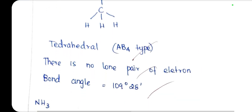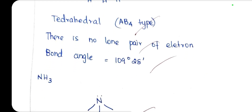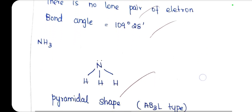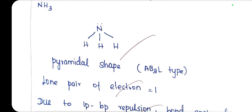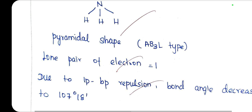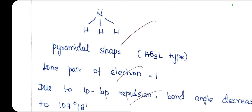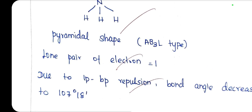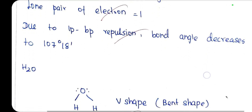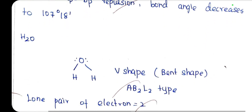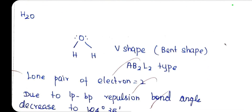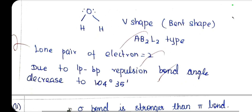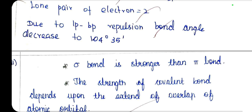The bond angle in ammonia is 109°28' reduced to 107° due to one lone pair on nitrogen — pyramidal shape AB3L. In water, the shape is AB2L2 with two lone pairs, so the bond angle is further reduced due to greater lone pair–bond pair repulsion.